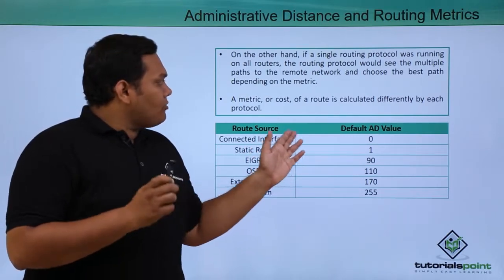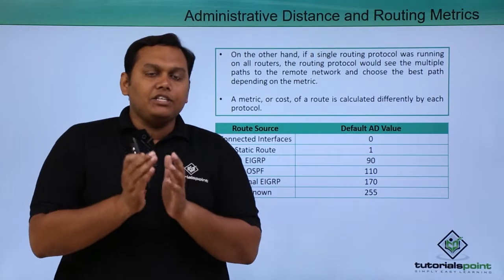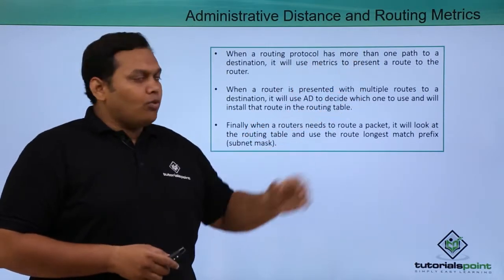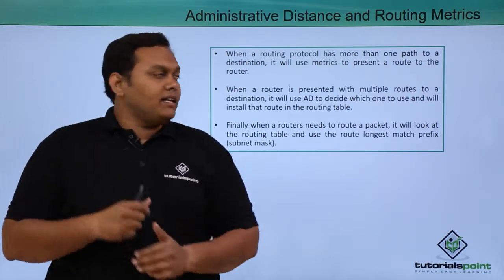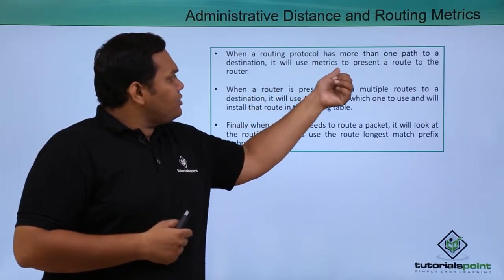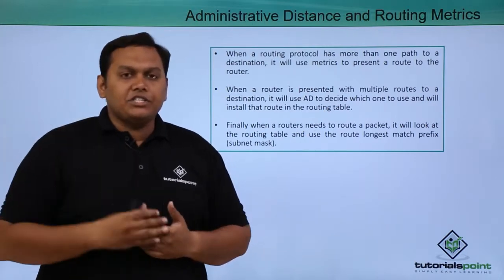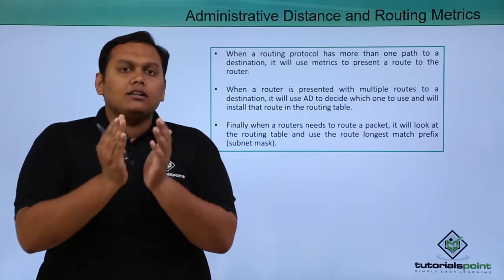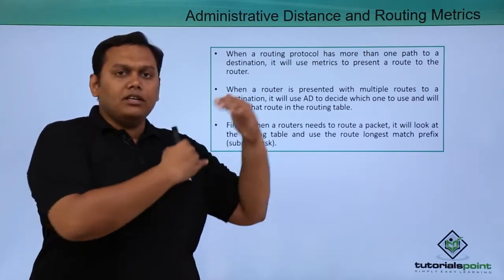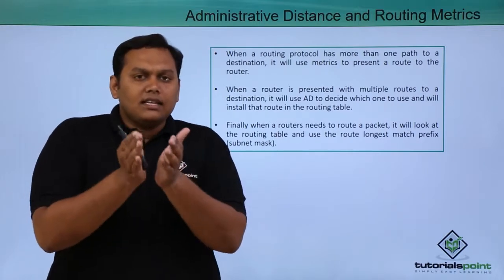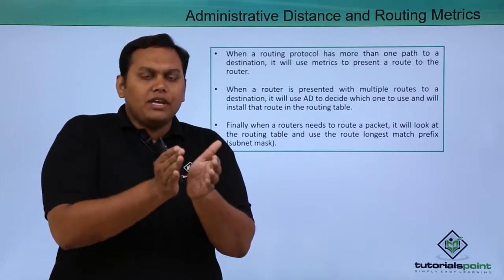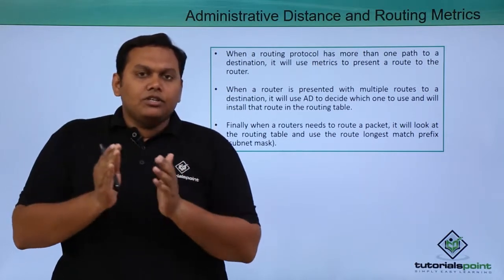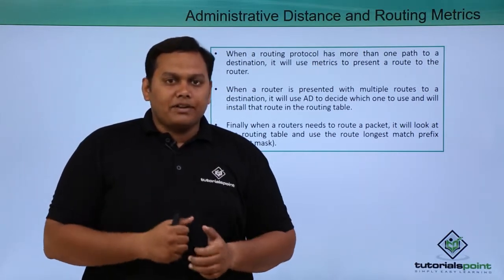A metric, or cost of a route, is calculated differently by each protocol. When a routing protocol has more than one path to choose, it uses metrics to determine the best route to the destination. When considering metrics, you also factor in the AD value — the trustworthiness — to select the best route that is updated in the routing table. These are the key concepts: administrative distance and routing metrics.